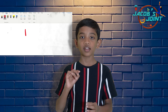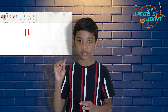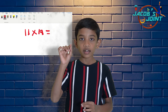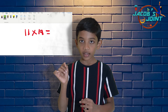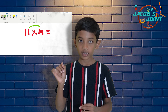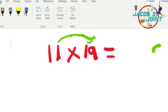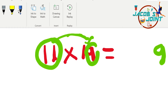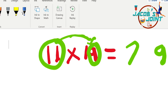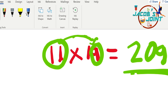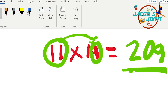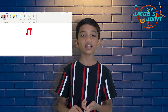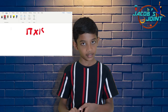11 into 19. First step: 1 into 9 equals 9. Second step: 11 plus 9 equals 20. The answer is 209.